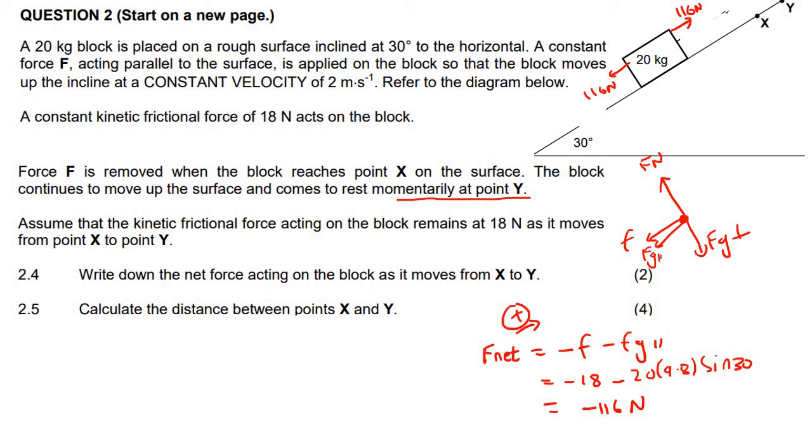They are asking for the distance between points X and Y, and that is for four marks. I'm going to take a grade 11 approach. If you're a grade 12 learner watching this, you could probably use your W_net equals delta EK kind of formula that will work, but I'm just going to do a grade 11 approach, which grade 12 learners can also use. That is just to use F_net equals MA to find the acceleration. And you can't say that the acceleration is zero because we're not moving at a constant velocity anymore. So the F_net is, let's say upwards is positive, minus 116. The mass of this object is 20. And so if we work out the acceleration, we get minus 5.8. So therefore the acceleration is negative 5.8 meters per second to the minus two.